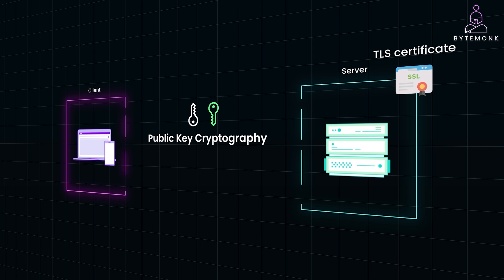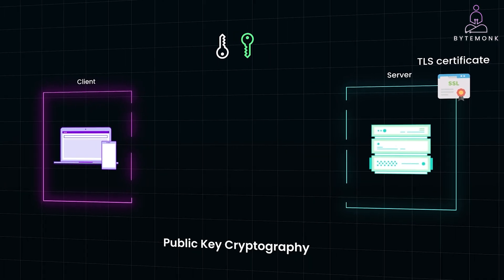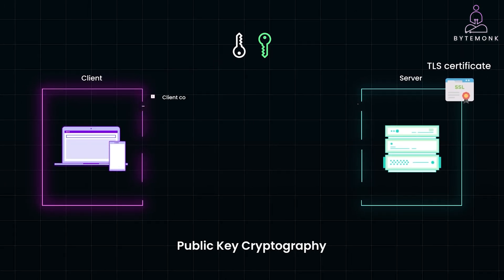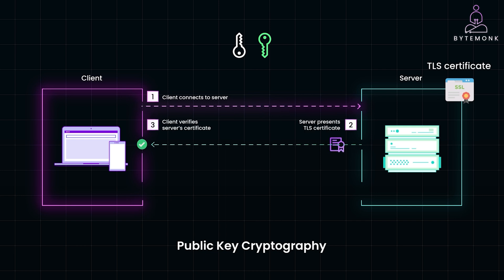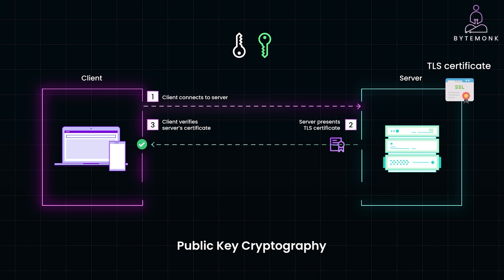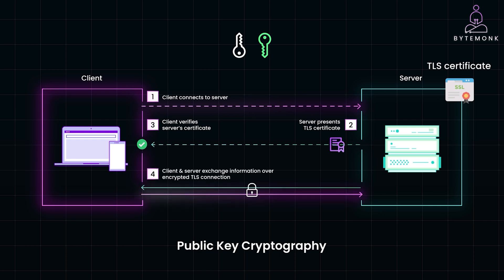Here is a simplified version of how the TLS handshake works. The client connects to the server. The server presents its TLS certificate. The client verifies the server's certificate against a trusted certificate authority, confirming the server's identity. And once validated, both client and server exchange information over the encrypted connection.